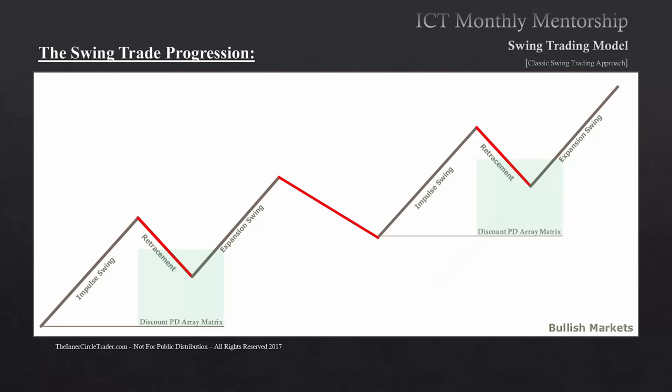Looking at swing trade progression — say this is a monthly chart. In a bullish market environment, you have a first impulse swing, then a retracement, then an expansion price swing, then a retracement, then another impulse, retracement, and another expansion — all the while making higher highs and higher lows. That's a classic textbook bullish trend. Now say this is a weekly chart: inside the first impulse swing on the weekly, the daily chart may have a smaller impulse swing with a deep retracement and a secondary expansion swing.